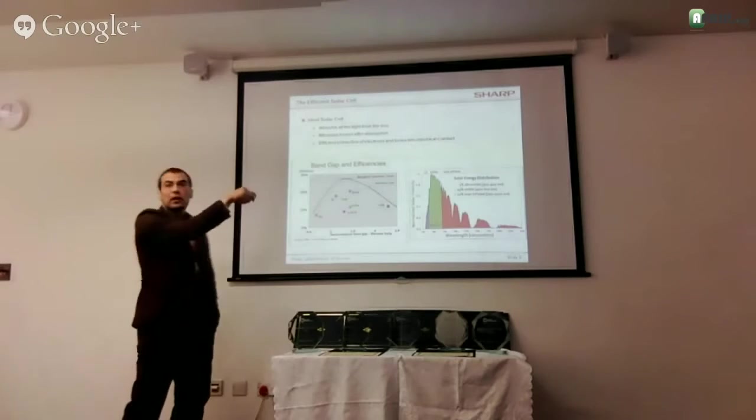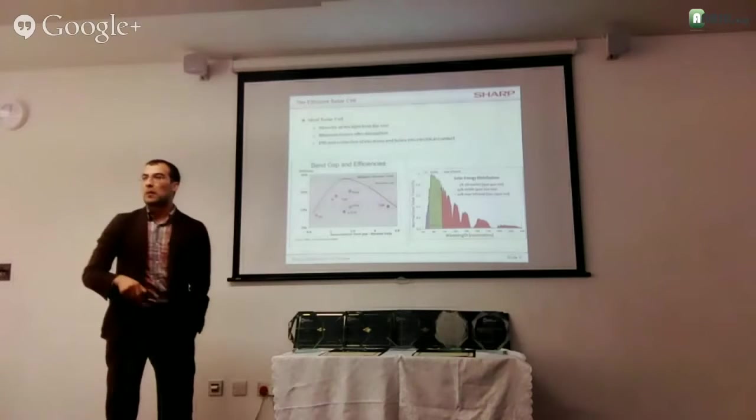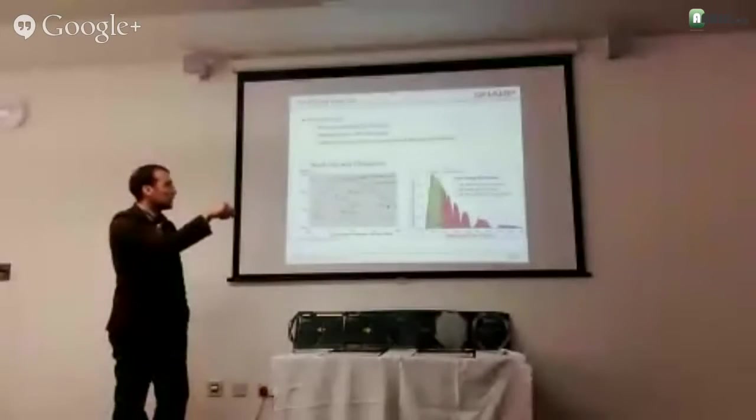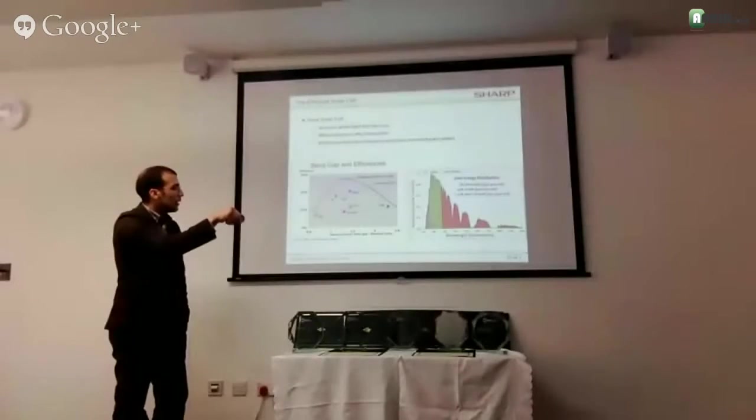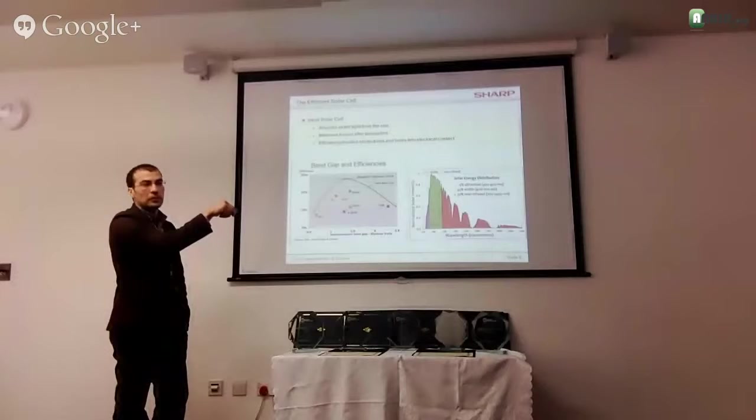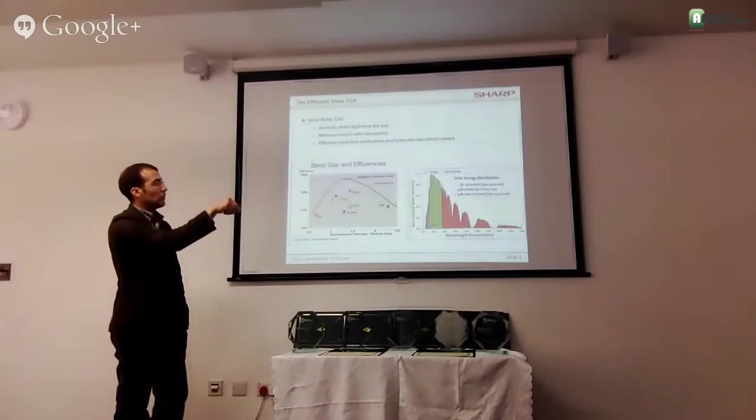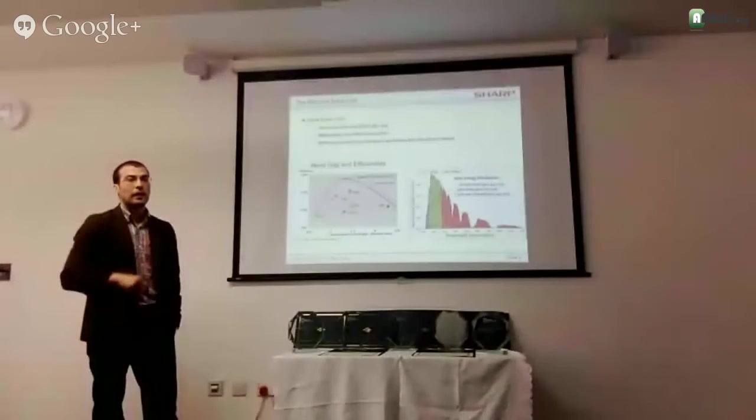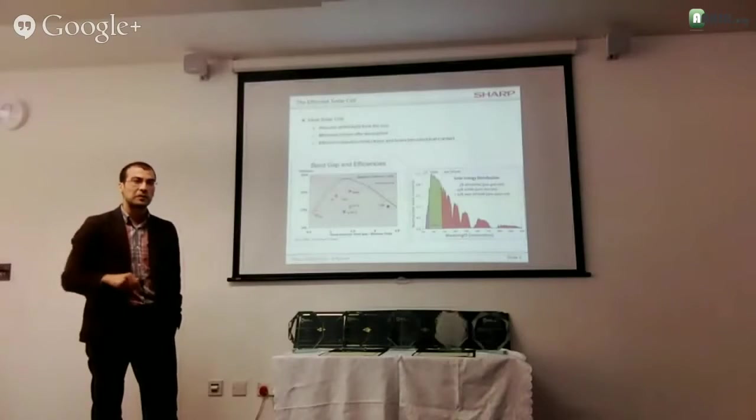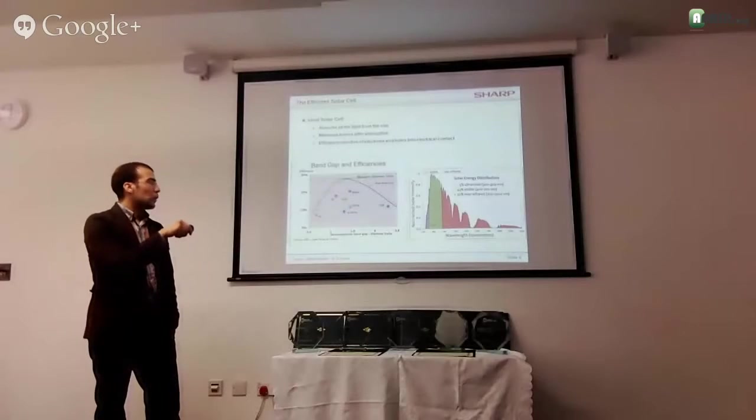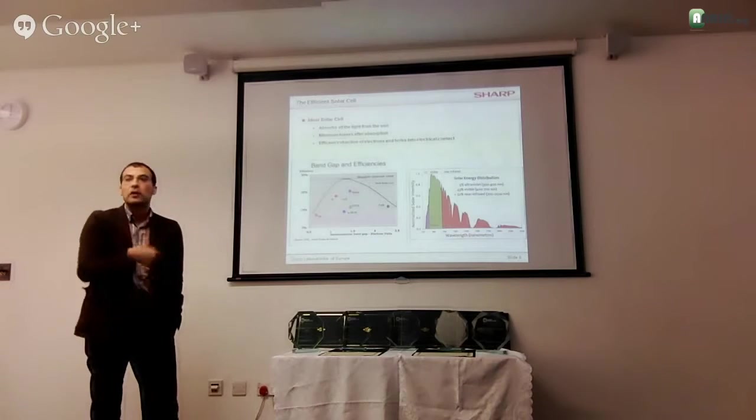In real life obviously we can't just pick a band gap and find the material. There are existing materials with specific band gaps and you can see here that this is germanium for example, this is silicon, this is gallium arsenide. And you can see why people have chosen silicon. Well it's not as good as gallium arsenide, but it's cheap. You can, people, if you think why don't we use this, because it can achieve much higher efficiency, well it's because it's very expensive and it's actually probably almost 100 times more expensive than silicon. Silicon is just available everywhere, it's just sand. And so this is why everyone is going for silicon.